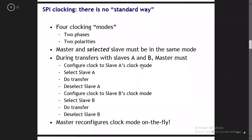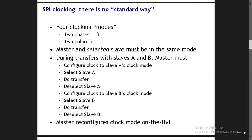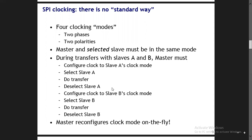Now we proceed to another interesting aspect of the SPI protocol: the clocking mechanism. In SPI we generally have four clocking modes. Before describing them, we need to understand two important terms: phase and polarity. There are two phases and two polarities, which we will see in the next slide with the help of a timing diagram.